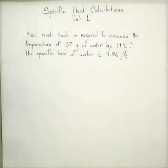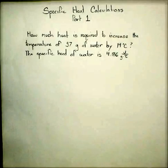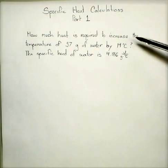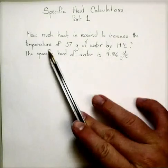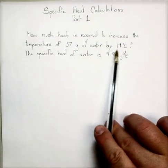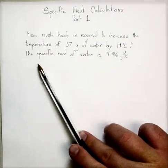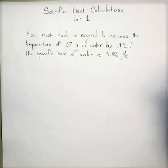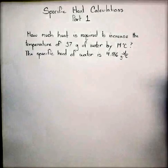Hey guys, today we're going to be looking at the specific heat of substances and how we use that in calculations. So here's the problem we're going to look at. How much heat is required to increase the temperature of 37 grams of water by 14 degrees Celsius? The specific heat of water is 4.186 joules per gram degrees Celsius.